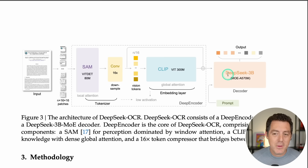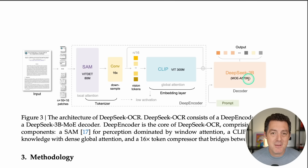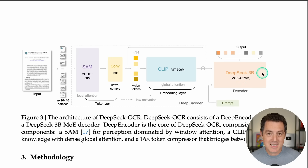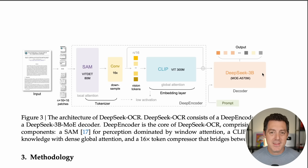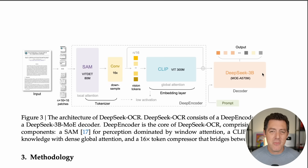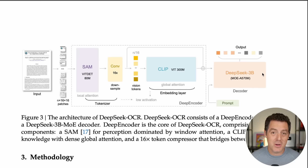Then in the output, we have DeepSeek 3B — a 3 billion parameter mixture of experts model with 570 million active parameters — and it decodes it. It takes the image and converts it back into text. And with that, we have a very efficient way to compress text down to an image, giving us 10 times the amount of text we can fit in the same token budget.